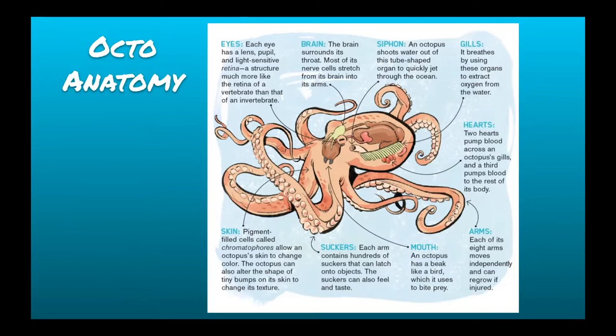They also have a beak, which is kind of interesting. Underneath the octopus is their mouth and they actually have a beak like a bird, which they use to bite their prey. They have features of many different types of animals — a beak like a bird, multiple arms, and they also breathe using gills. They are in fact invertebrates, so they do not have bones, but they have many interesting features that allow them to survive in the ocean.